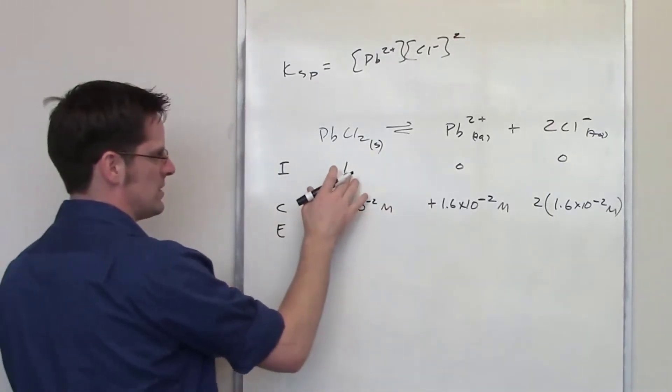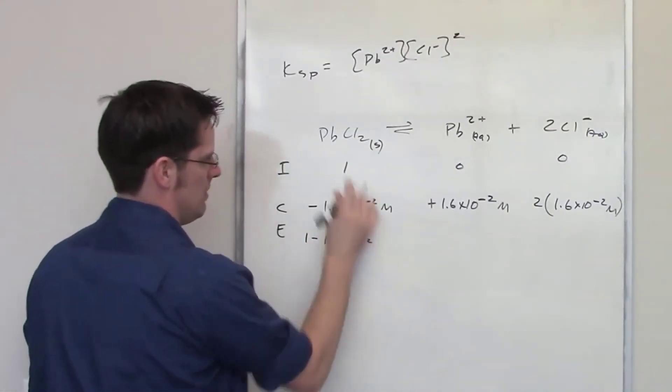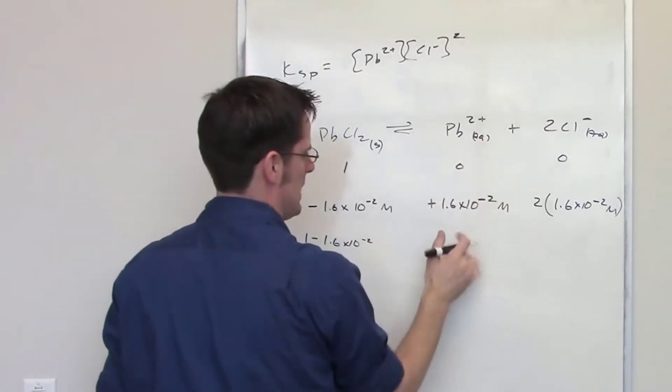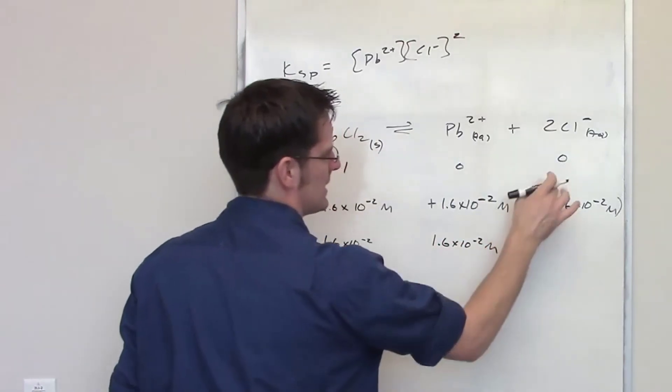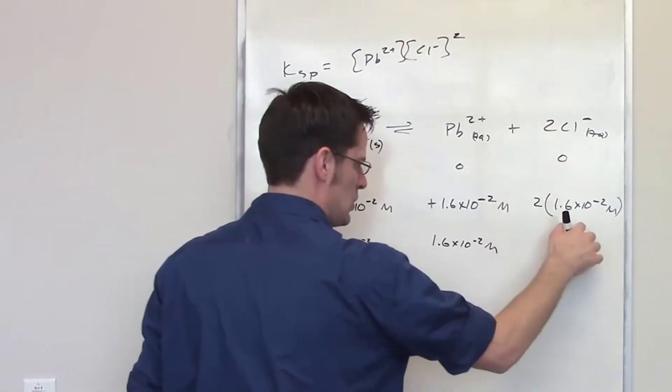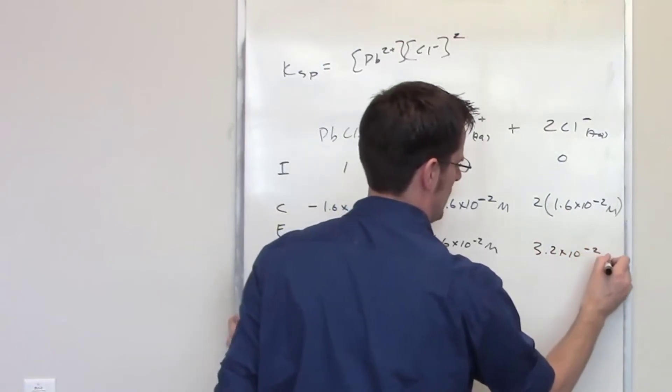The final concentrations of each of these, then, is going to be 1 minus this number for my lead chloride. It's going to be 0 plus this number, 1.6 times 10 to the negative 2, and it's going to be 0 plus 2 times this number. So that's going to be 3.2 times 10 to the negative 2 molar.